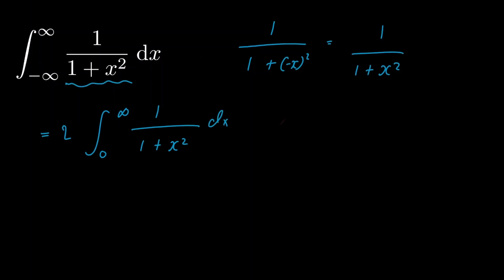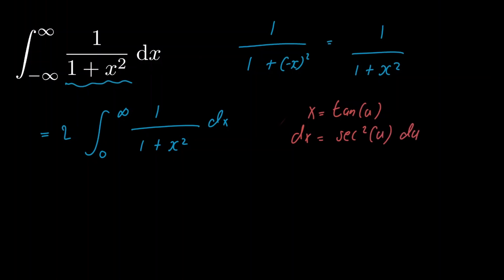Now we're going to make the following substitution. We're going to set x to be equal to tangent of u. If we differentiate both sides we get dx is equal to secant squared of u du. And we can use the Pythagorean identity to rewrite this as dx is equal to 1 plus tangent squared of u, all multiplied by du.